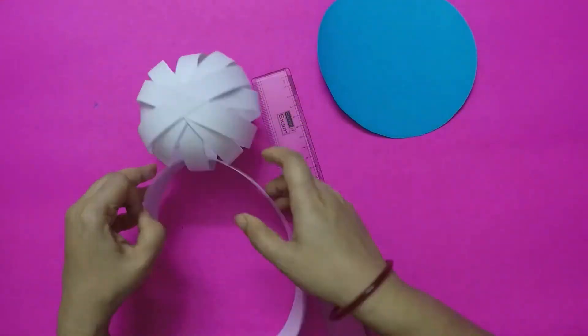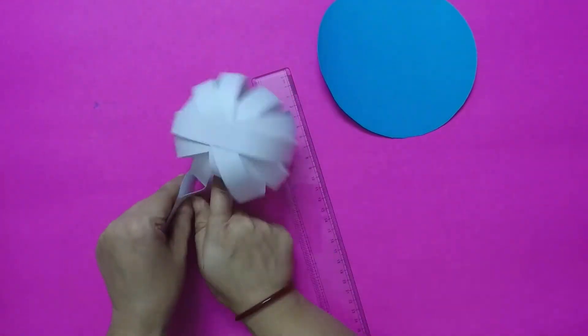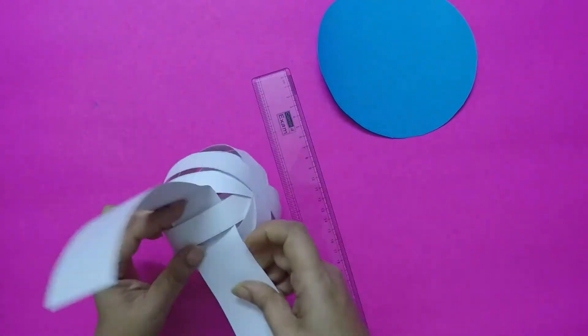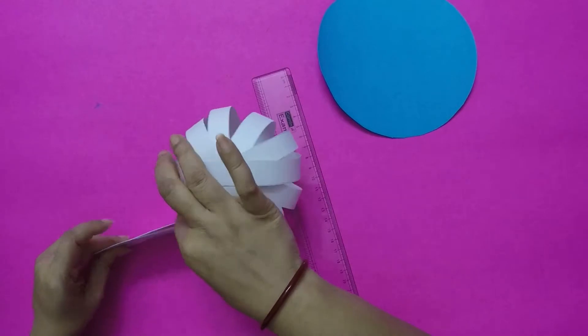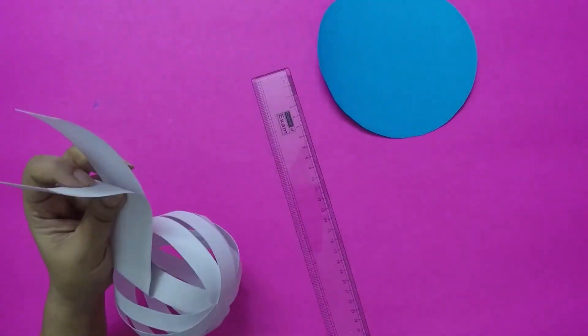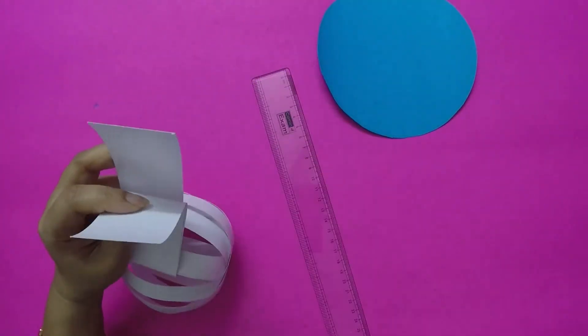Take a thick white strip and fold to put inside the ball and bring it outside. This will be the back side of our helicopter.